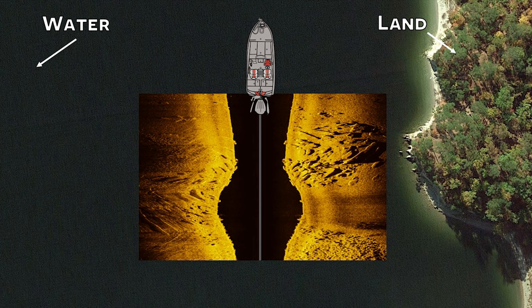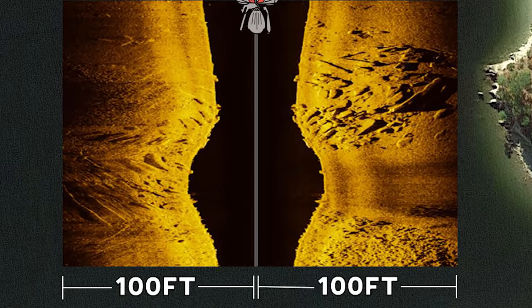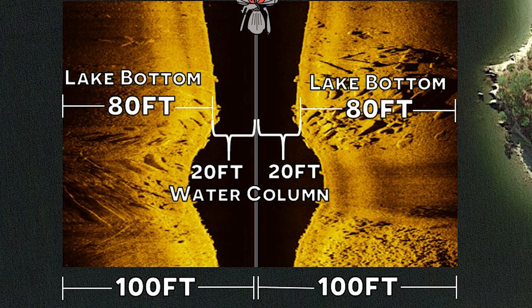There's one thing I want to clarify about side imaging that confuses a lot of anglers. When you set the range of your side imaging to, let's say, 100 feet, a lot of anglers assume that the side imaging is scanning a hundred feet across the bottom of the lake to the right and to the left of the boat. However, you have to account for the fact that side imaging also captures the water column — the black space in the middle of the screen. In this example, you can see there's 20 feet of black space on both sides of the center line and then 80 feet of the colored region. The 80 feet of colored region is the actual bottom of the lake you're scanning. Therefore, even though you're setting your range to 100 feet, you're actually only scanning 80 feet of the bottom on both sides of the boat.